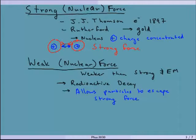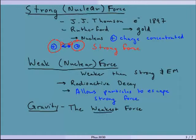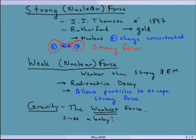Then there's gravity, which we've talked about a bunch already. This is the weakest force, which is a little counterintuitive since the weak force is called that. But gravity is actually the weakest one — and it's actually why we know about it so well. Because gravity is so weak, we as humans can work against it. I can jump in the air against gravity; it is much, much weaker.